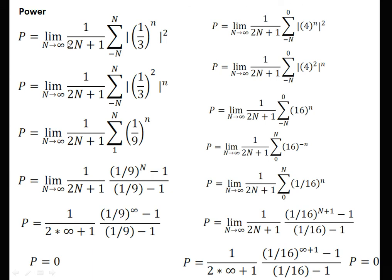Now we calculate the power like the previous example and find that the power is 0. We put our x[n] and check the signal range. For the (1/3)^n part, it is active from 1 to N (not N+1). When we put N→∞, we get 0. For the 4^n part, the signal is active from −N to 0; we make the square 16^n, change the limit from 0 to N, making it (1/16)^n. Applying the formula and putting N→∞, we get the answer 0. Therefore, total power is 0.